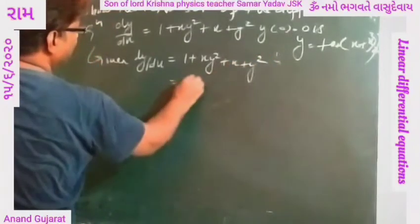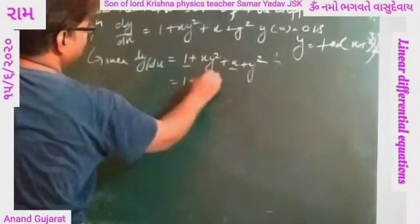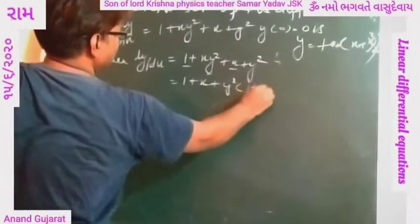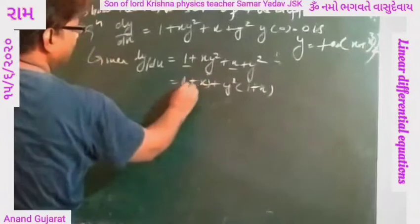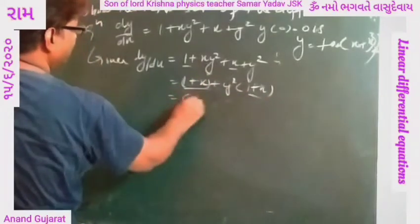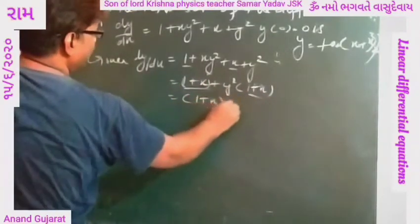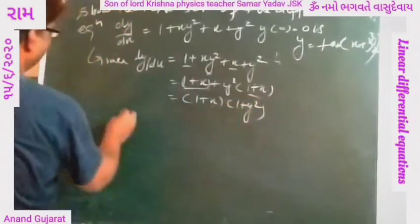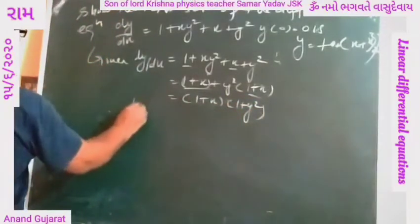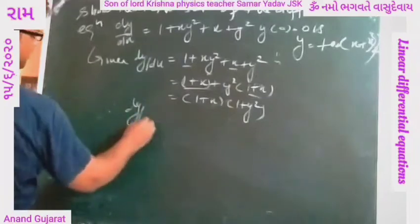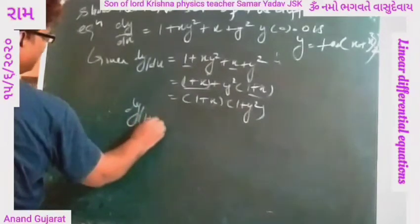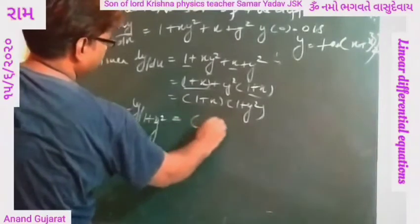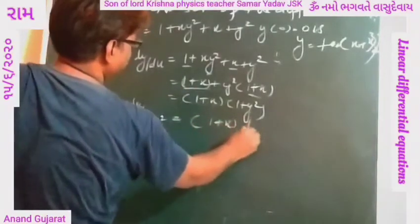We can write 1 + x from the first two terms, and take y² common, so we get (1 + x). Taking (1 + x) common, we can get (1 + x)(1 + y²). Therefore, separating variables: dy/(1 + y²) = (1 + x) dx.